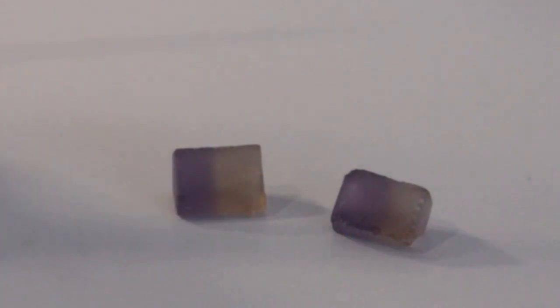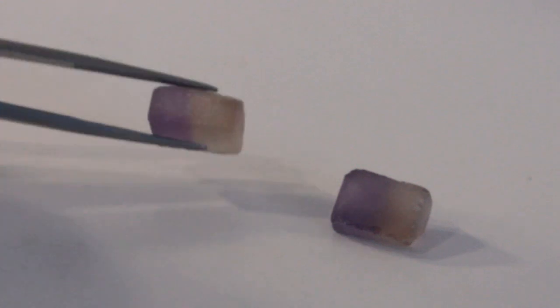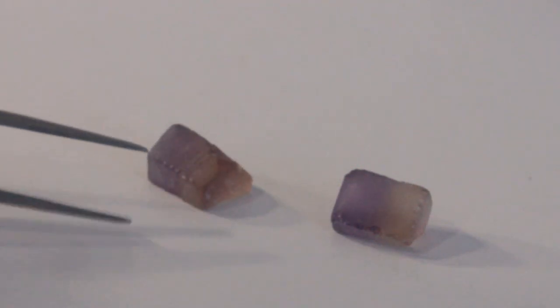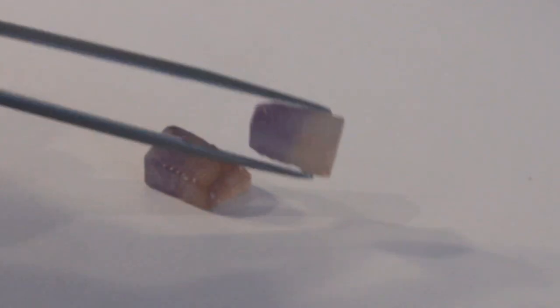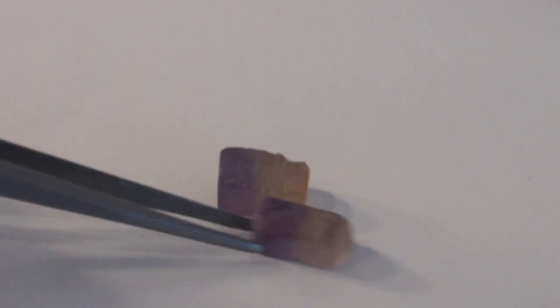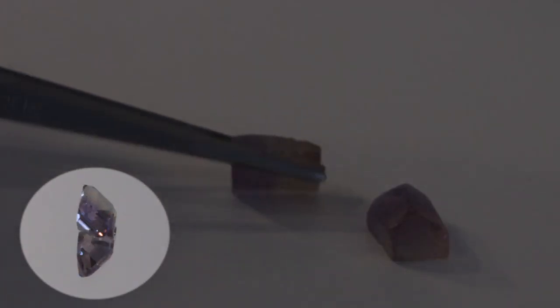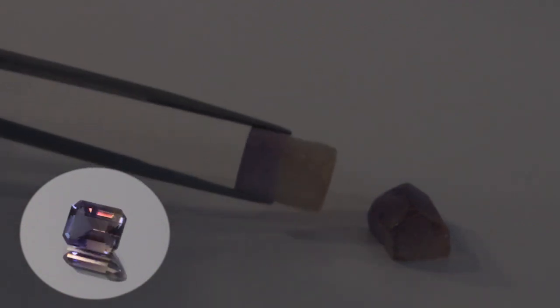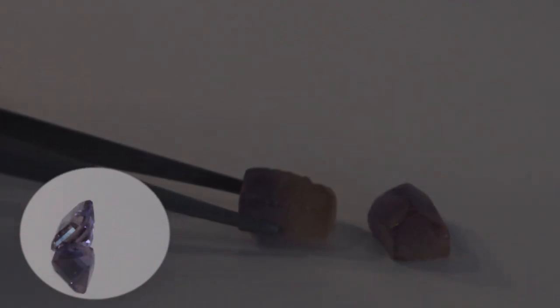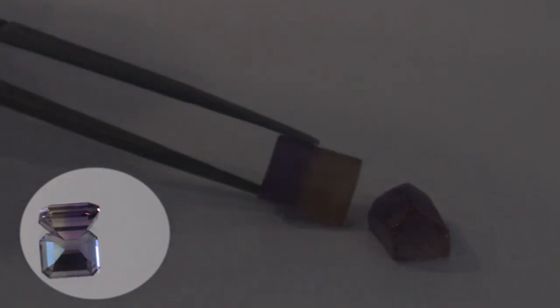Here are the two remaining pieces of ametrine preforms that I had from a larger parcel of ametrine rough, which I purchased a very long time ago. Last week, I cut one of the two remaining pieces of ametrine rough into a rectangular step cut design, and here is how it turned out.